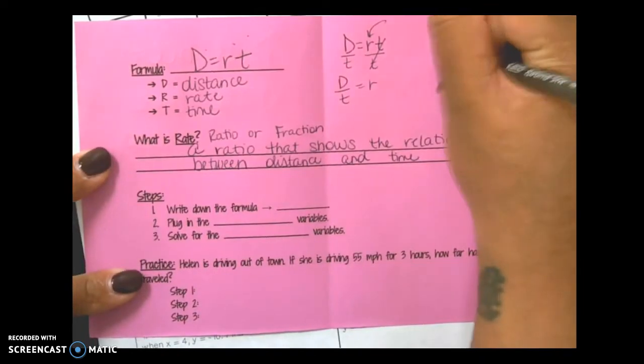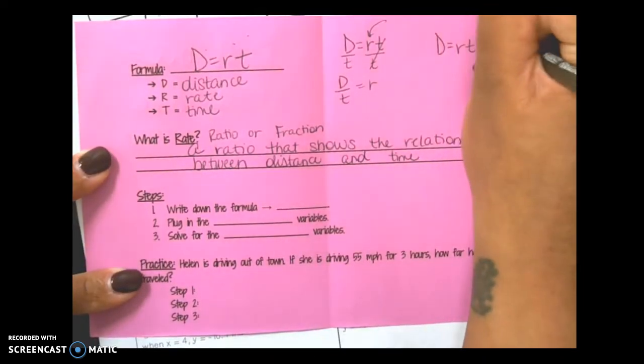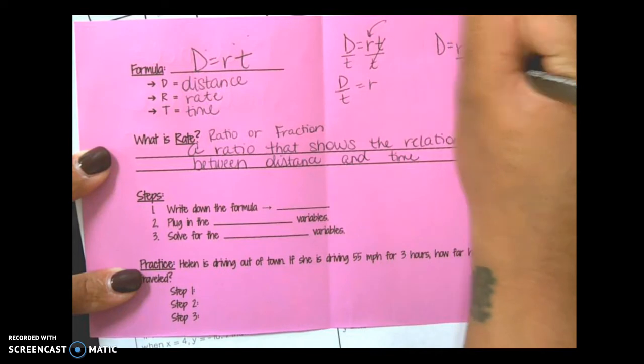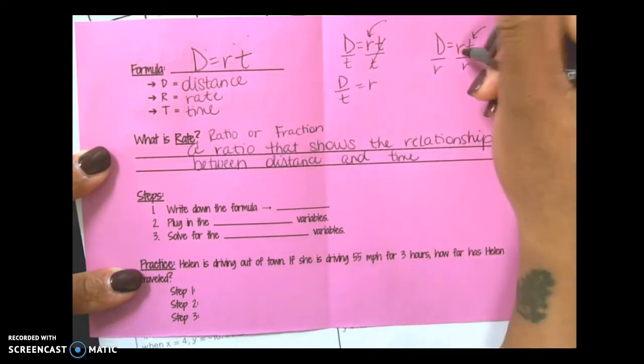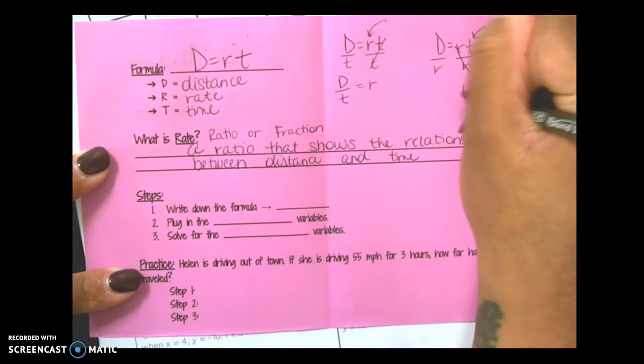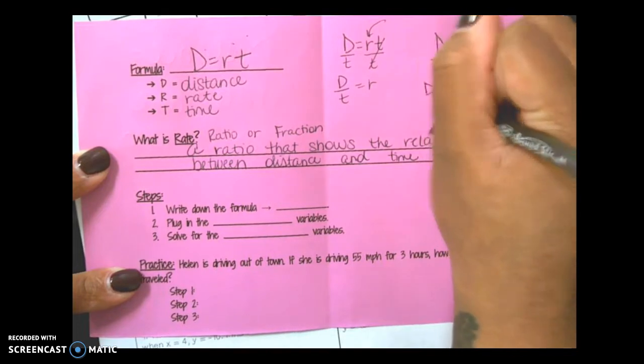Then you took D equals RT and you solved for T. Divided both sides by R. These R's cancel out. T is equal to D divided by R.